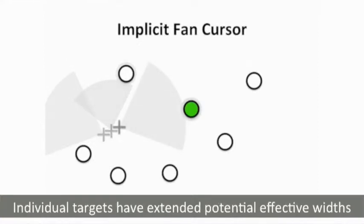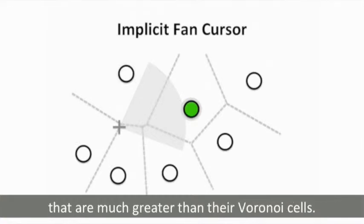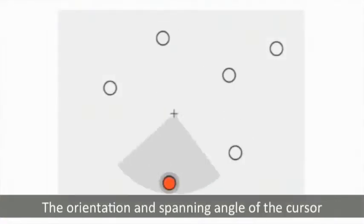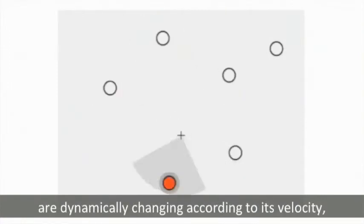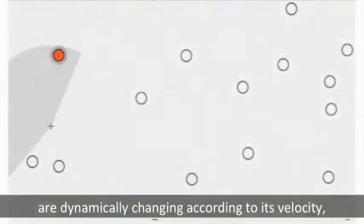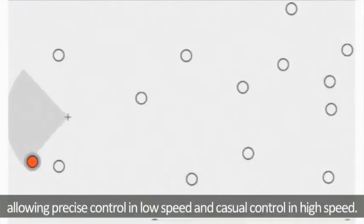Individual targets have extended potential effective widths that are much greater than their Voronoi cells. The orientation and spanning angle of the cursor are dynamically changing according to its velocity, allowing precise control in low speed and casual control in high speed.